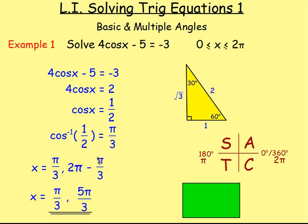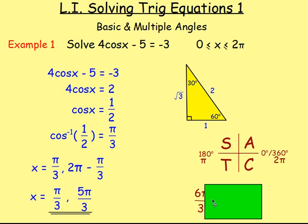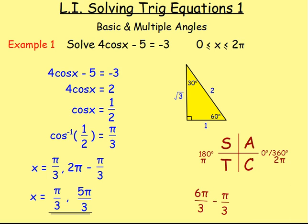To make 2π minus π over 3 simple, you can imagine 2π as 6π over 3. If you do 6π thirds minus 1π third, that gives you 5π thirds. So your answers are π over 3 and 5π over 3.